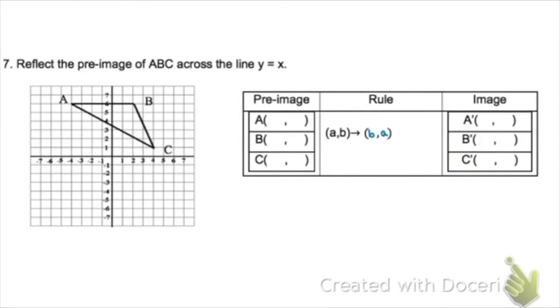Your rule for reflecting your images over the line y equals x. Every point (a,b) becomes the point (b,a), the x and y values switch. So (-4,6) becomes (6,-4), (2,6) becomes (6,2), and (4,1) becomes (1,4).